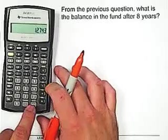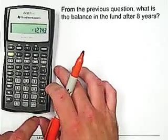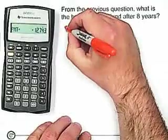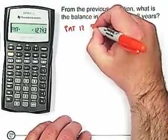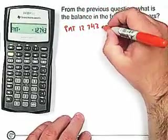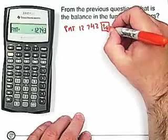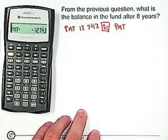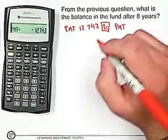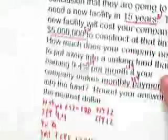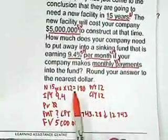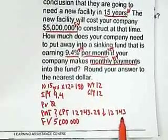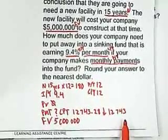My answer came up negative, so I have to make sure to hit the plus-minus button and then the payment button. Type in the payment as $12,743, hit the plus-minus button, and then PMT. The reason we're doing this is because the question said round your answer to the nearest dollar — so this is how much we're actually putting into the sinking fund every month.